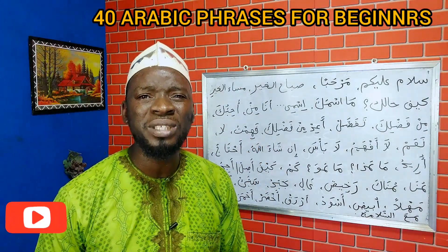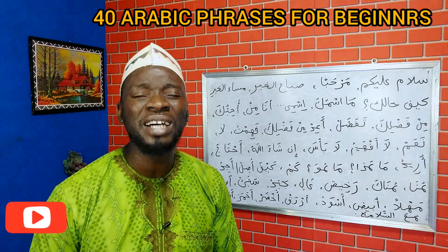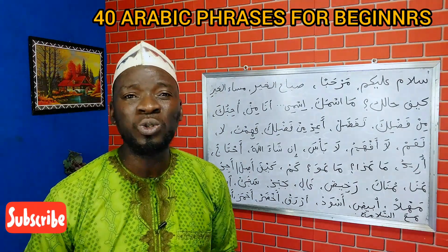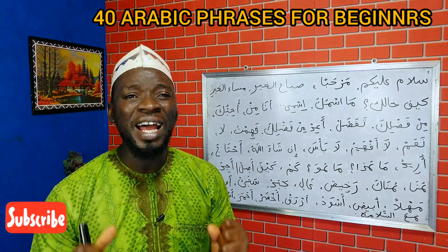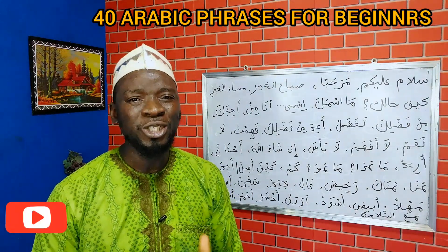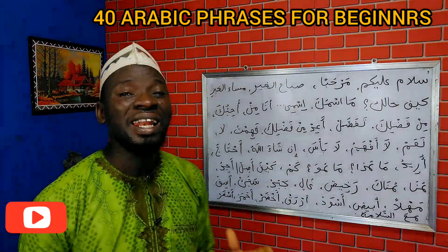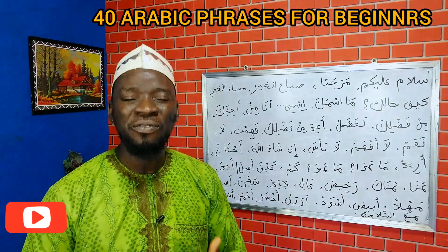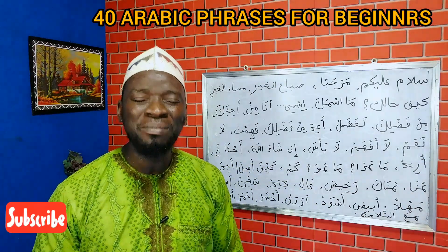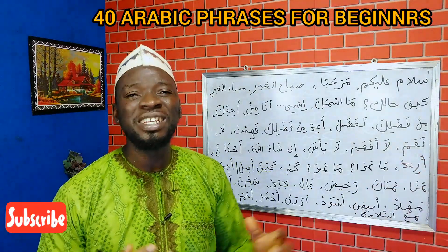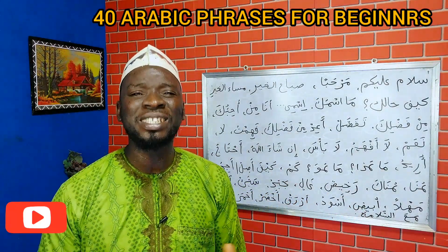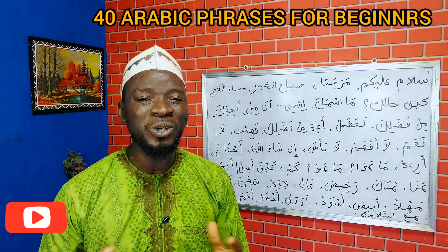Then we say fahimtu. Fahimtu ad-darsa jayidan means I understand the class very well. Fahimta ad-darsa jayidan means you understood the class very well. Hal fahimtu means do I understand? Hal fahimta means do you understand? La means no — ma afhamu, I don't understand. Naam means yes — naam fahimtu, yes I understand.